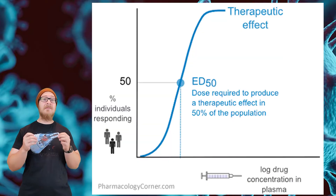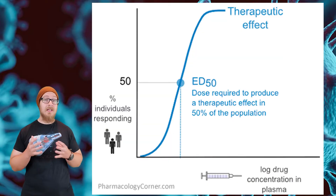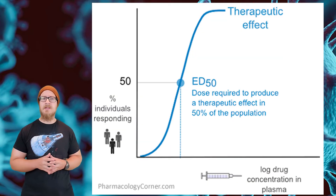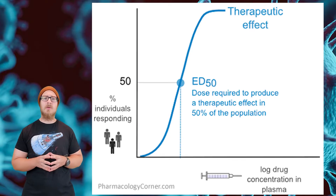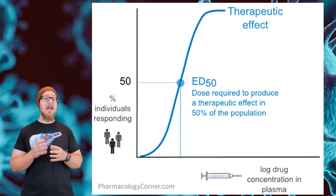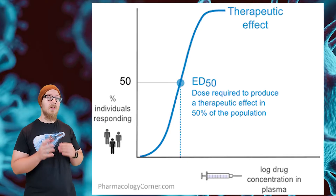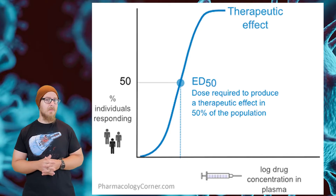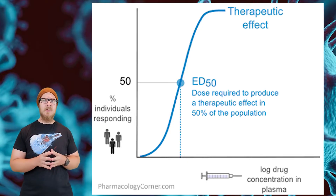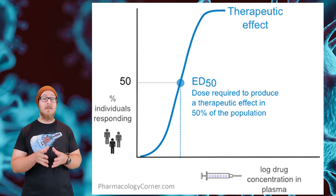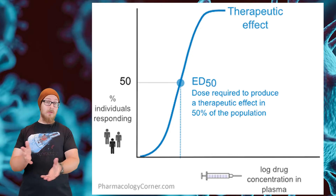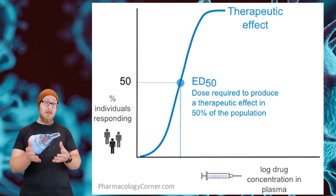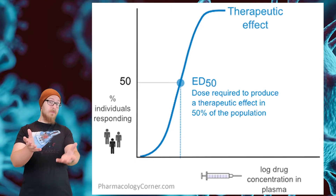An effective dose 50 test, or an ED50 test, seeks to determine the dose of a chemical that is effective at treating a condition in 50% of a population. This is commonly done by medicine manufacturers — they try to determine the effective dose of, say, a painkiller or a sleep aid that will actually improve symptoms.